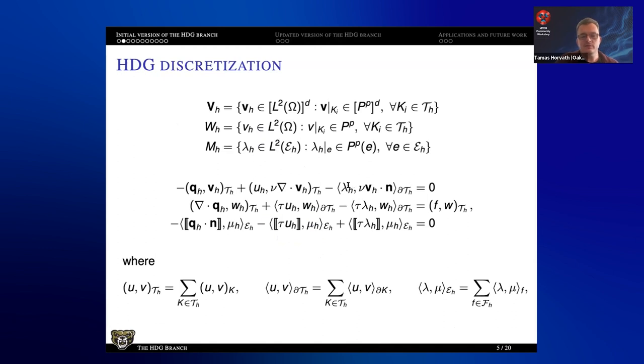And you introduce this third variable here, this λ_h, as the trace variable. So it's something that lives on the skeleton of the mesh. So that's coming from the space M. V and W are your standard DG spaces on the elements. One is vector-valued, the other is scalar-valued, and then this space M is a DG space on the skeleton of the mesh.